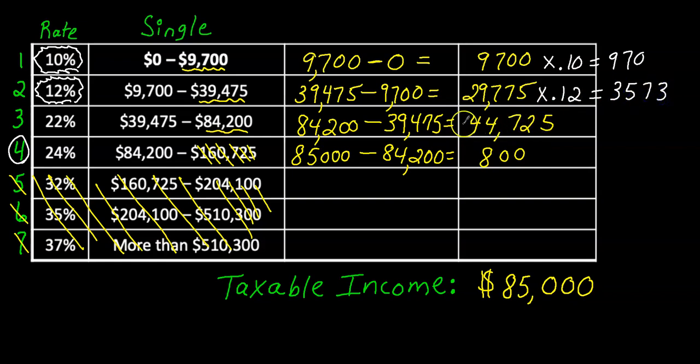Then I'll take the $44,725 times, right over here, 0.22. That's 0.22 and that's going to equal $9,839.50. $9,839.50. Hope you can read that.